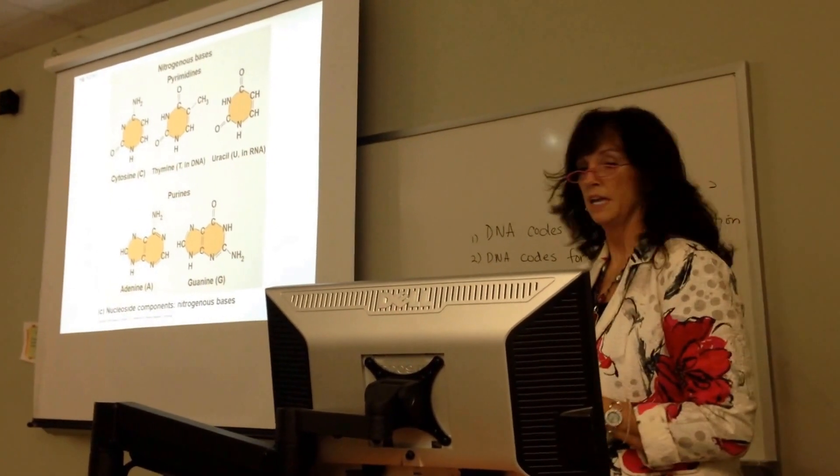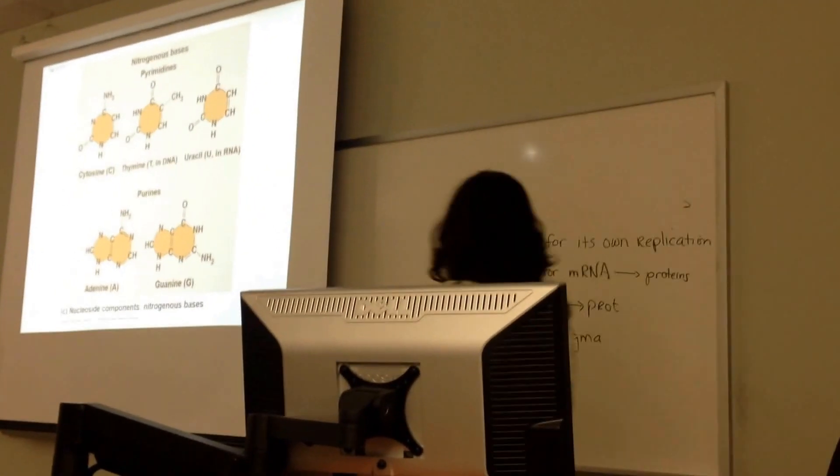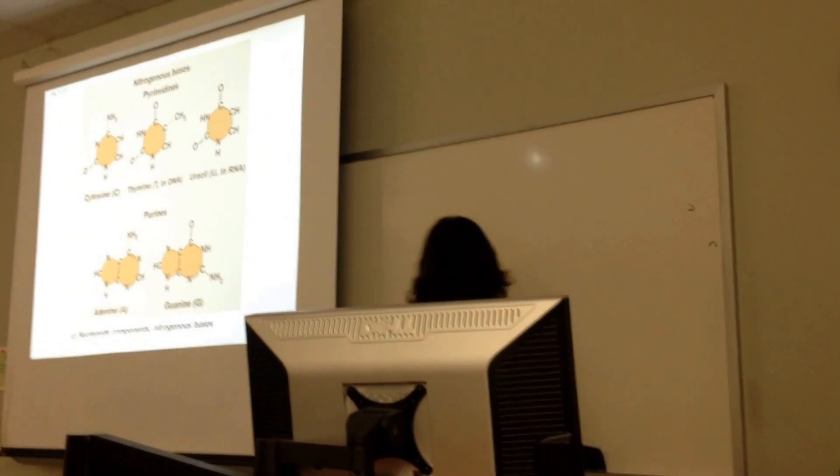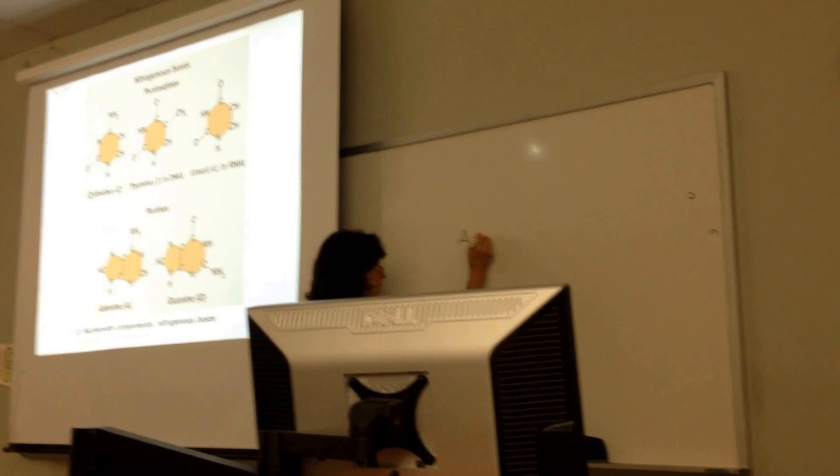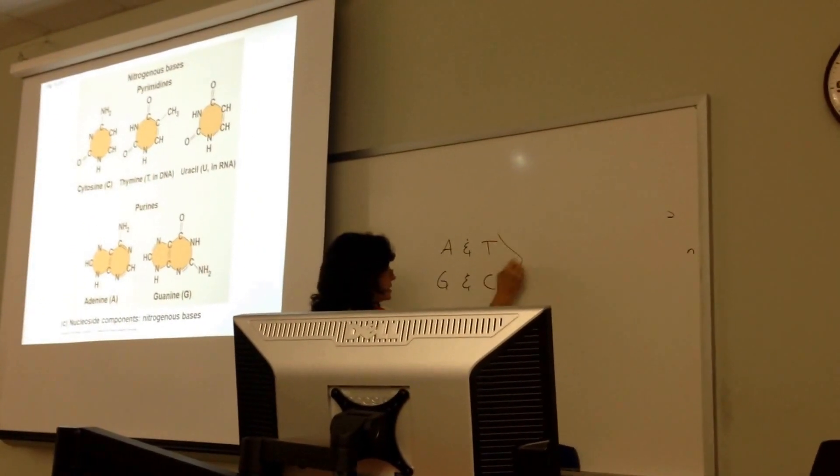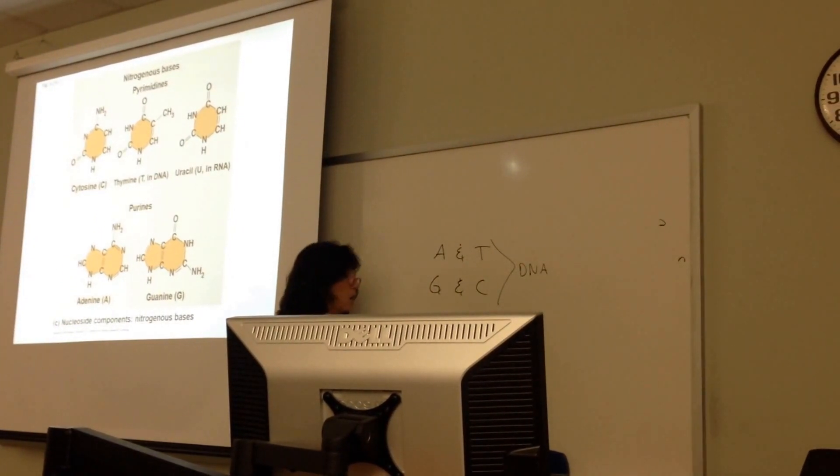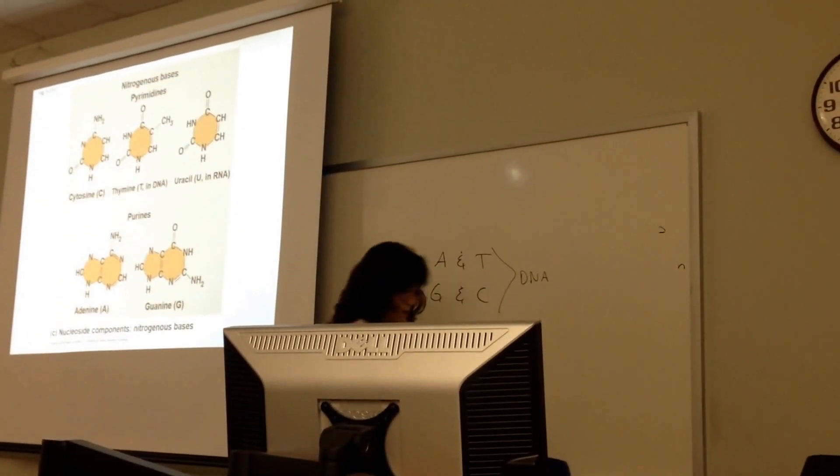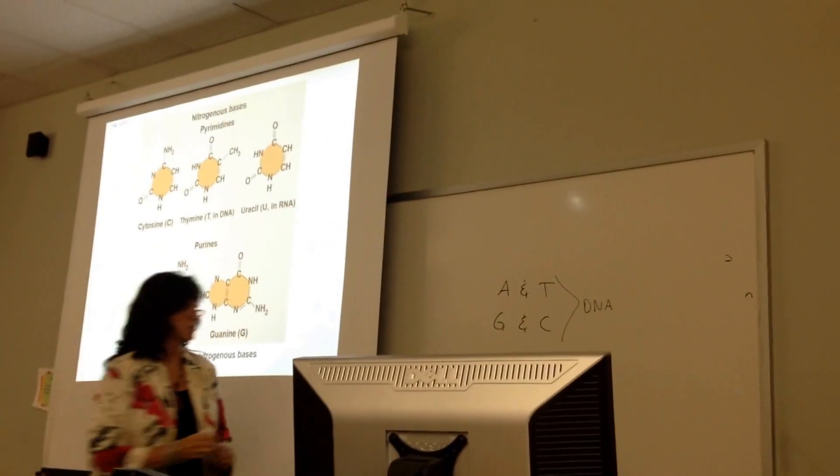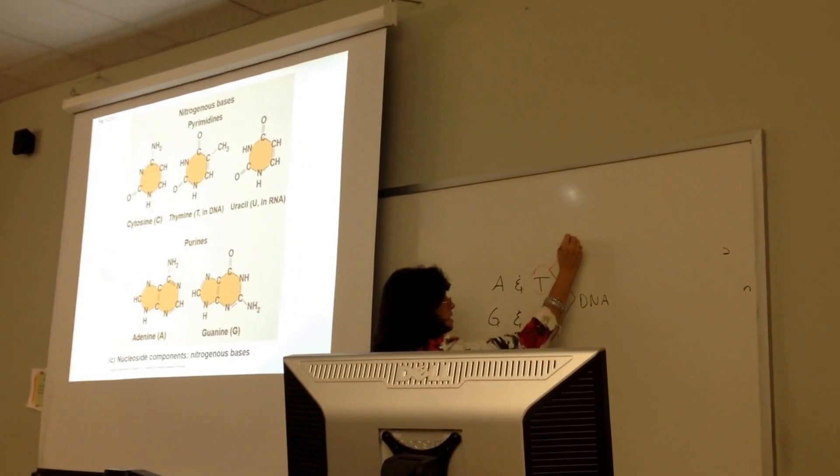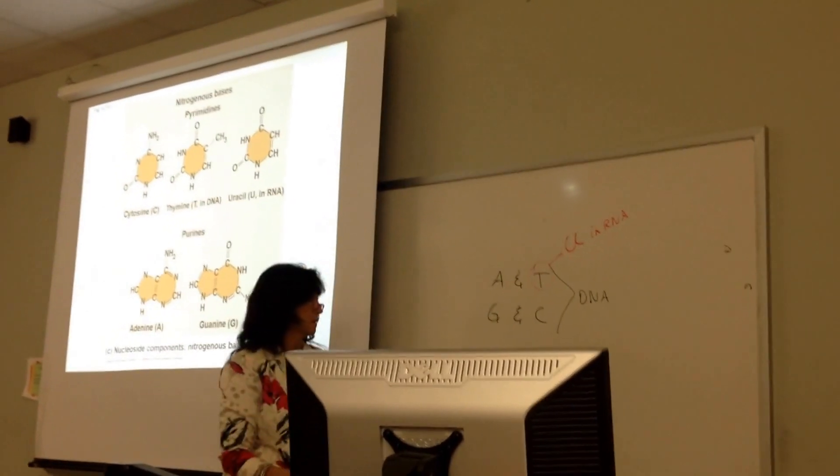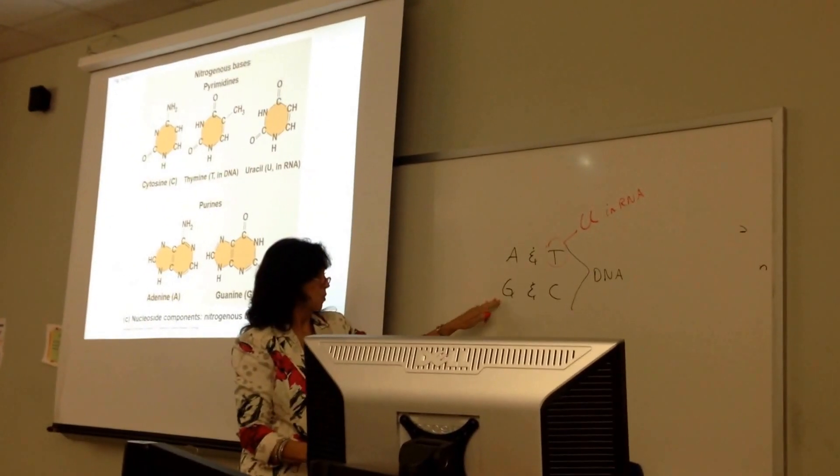So what you need to know is, you don't need to know which is which, but you do need to know what pairs with what. A always pairs with T and G always pairs with C. Now this is in DNA. In RNA, we don't have T. In RNA, we have actually uracil instead. So this would be uracil in RNA. So uracil would pair with adenine.